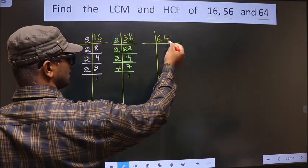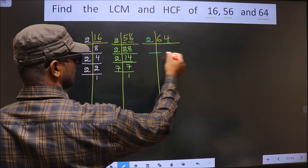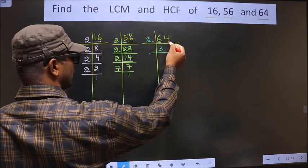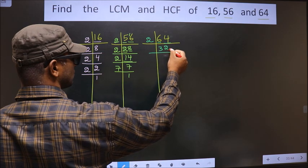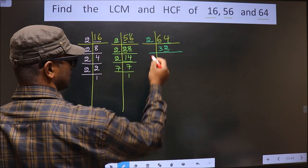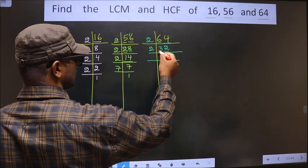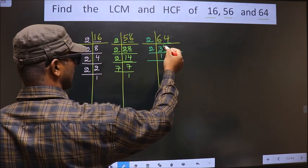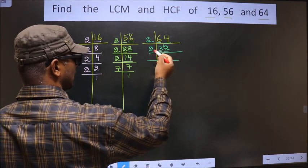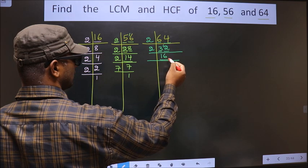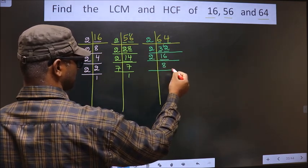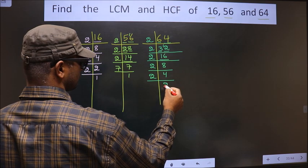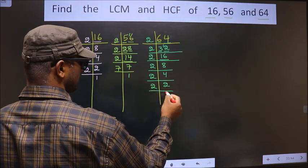Now for 64 — the last digit is 4, which is even, so we take 2 here. 2 times 32 is 64. Next, 2 times 16 is 32. Then 2 times 8 is 16. Now 2 times 4 is 8. Then 2 times 2 is 4. Now 2 is the prime number so 2 times 1 is 2. So the prime factorization of 64 is 2 × 2 × 2 × 2 × 2 × 2.